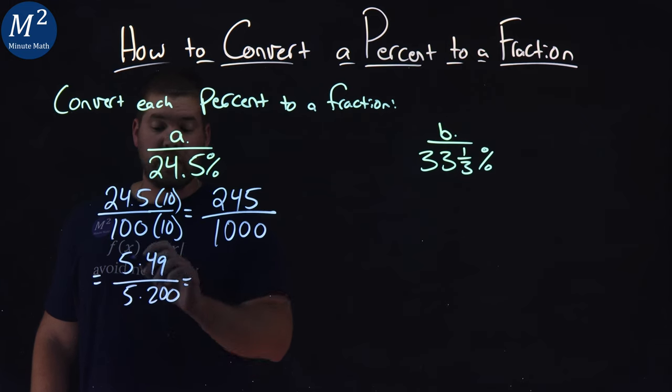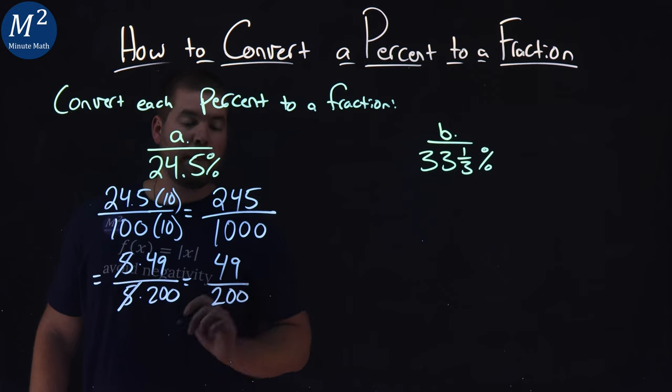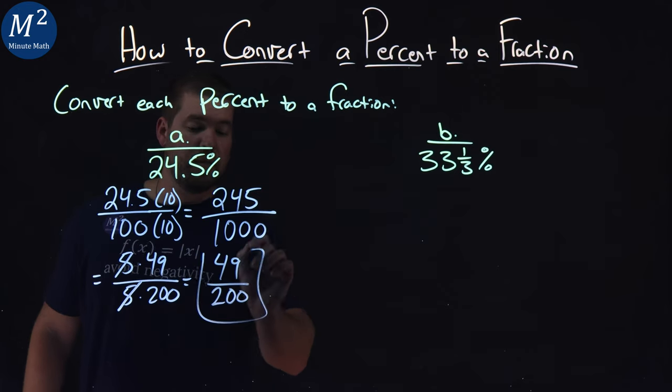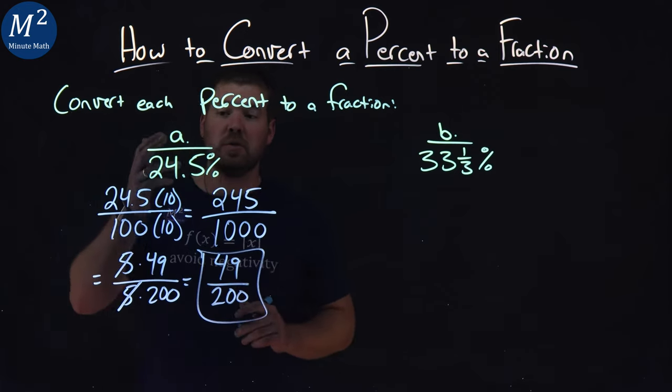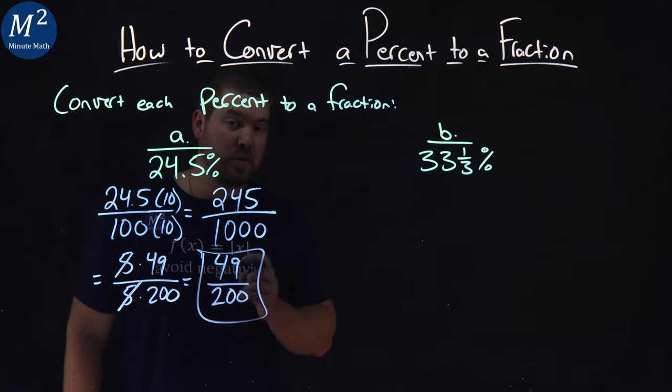We can simplify this. The 5s cancel, and we're left with 49 over 200. And this is actually in simplest form, and we have our answer. 24.5% is equivalent to 49 over 200.